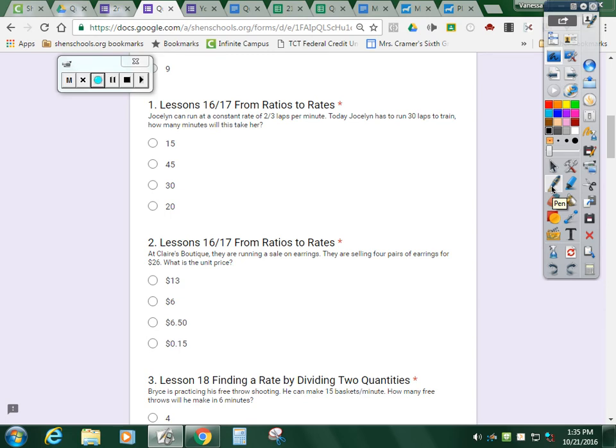Number one. Jocelyn can run at a constant rate of two-thirds laps per minute. Today Jocelyn has to run 30 laps to train. How many minutes will this take her? So the first thing I'm going to do is two-thirds and I'm going to label it. The two belongs to the laps, the three belongs to the minutes.